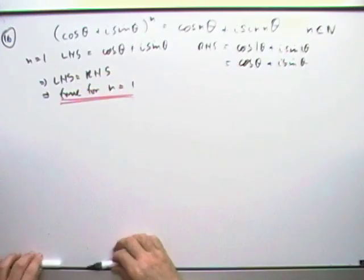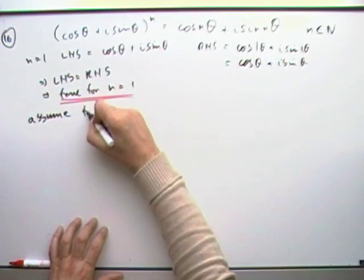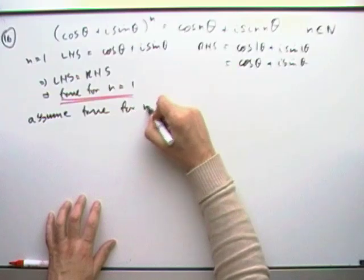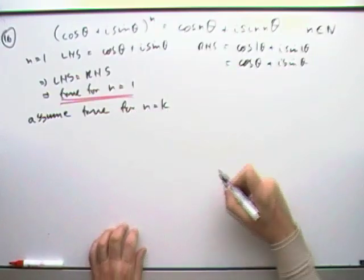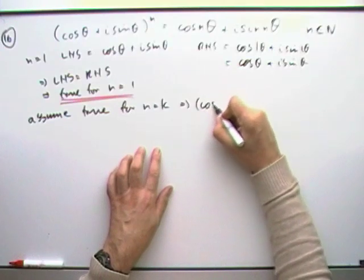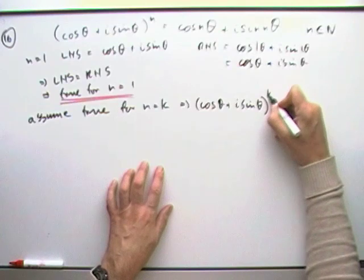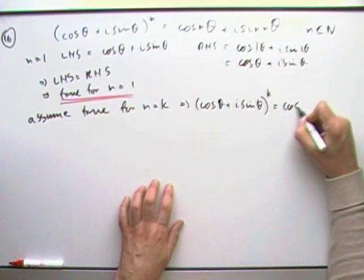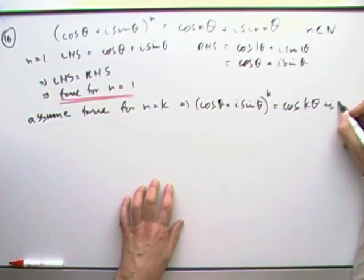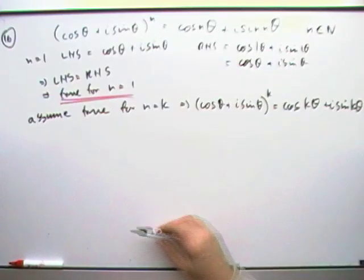Right, that took some doing, didn't it? Now, make your assumption. Assume it's true for n equals some other number k, which would mean that, this is inductive hypothesis, that (cos θ + i sin θ)^k would be cos kθ + i sin kθ. I'll call that 1, that's the inductive hypothesis.